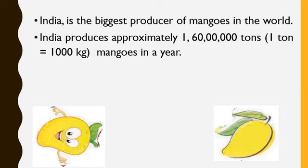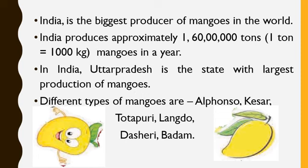Children, do you like mangoes? Yes, everyone likes it. Right from childhood till older age, everyone is tempted for eating mangoes. Ask your grandfather and grandmother if they enjoyed climbing on mango trees when they were kids — certainly they will agree. Do you know India is the biggest producer of mangoes in the world? India produces approximately 1 crore 60 lakh tons of mangoes in a year. In India, Uttar Pradesh is the state with the largest production of mangoes. There are different types of mangoes available like Alfonso, Keser, Totapuri, Langdo, Dasheri, and Badam.